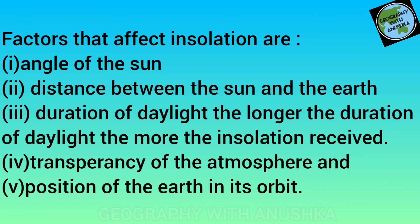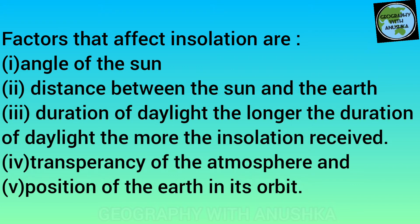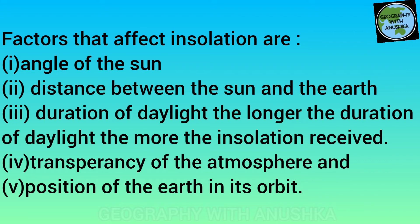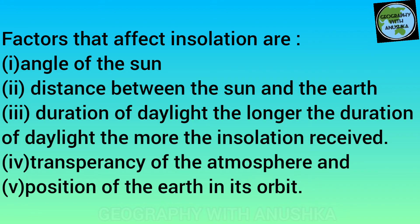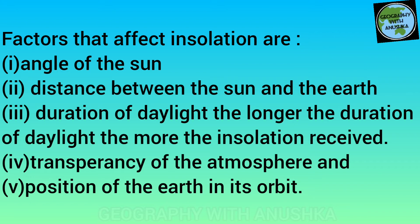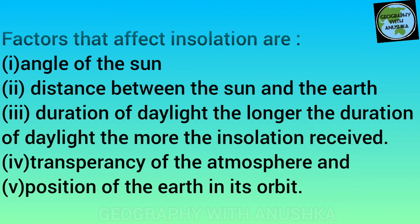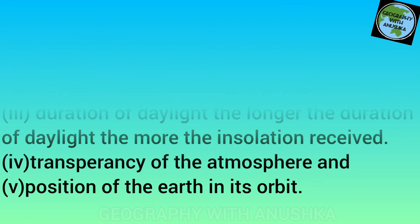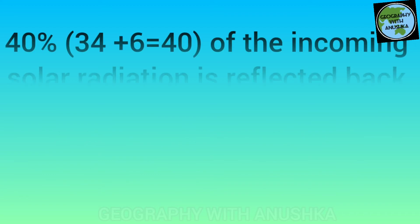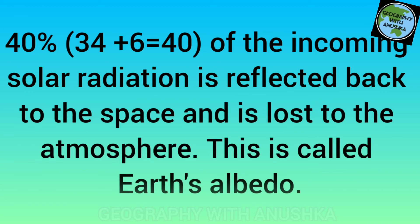Factors that affect insolation are: number one, angle of the sun; number two, distance between the sun and the earth; number three, duration of daylight — the longer the duration of daylight, the more the insolation received; number four, transparency of the atmosphere; and number five, position of the earth in its orbit.